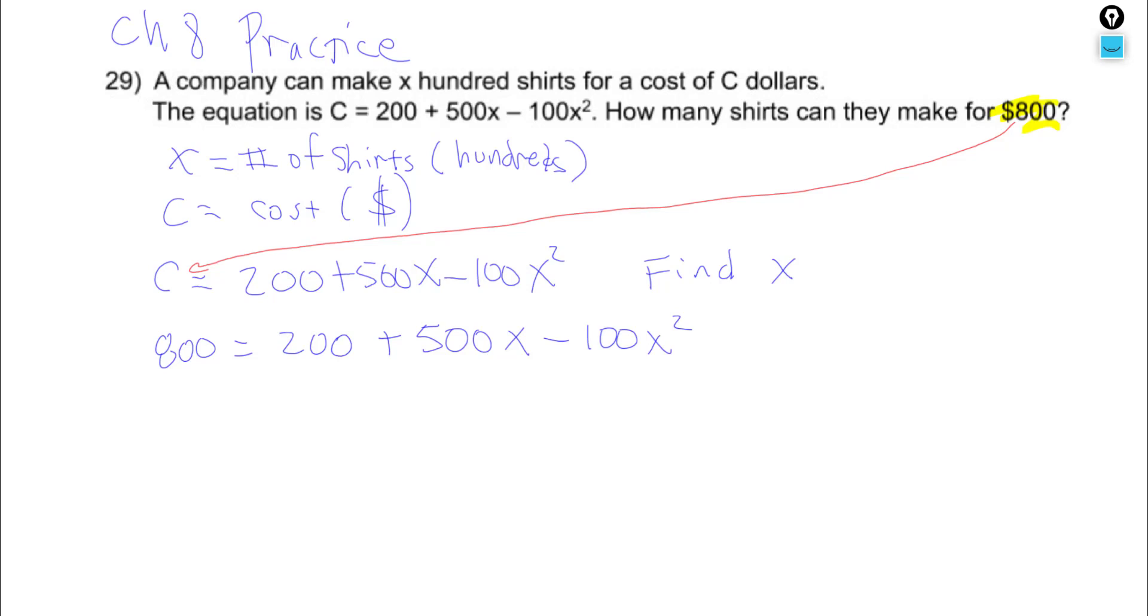Now when we solve second power equations, second power equations have to equal zero before we can start. So I'm going to minus the 800 to make it equal zero. Now 800 and the 200 are my only like terms, so I'm going to just zero out. And 200 minus 800 is minus 600 plus 500X minus 100X squared.